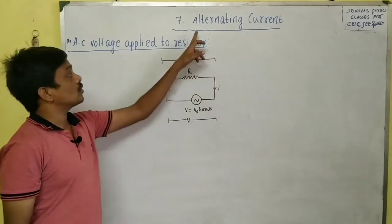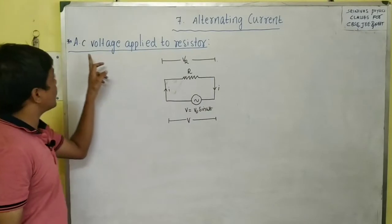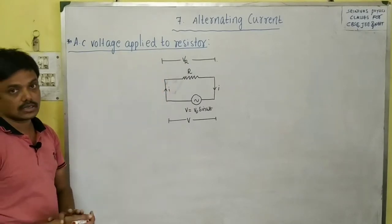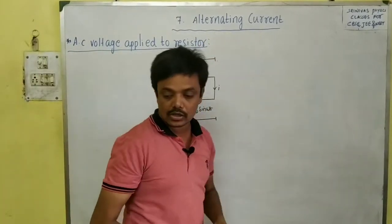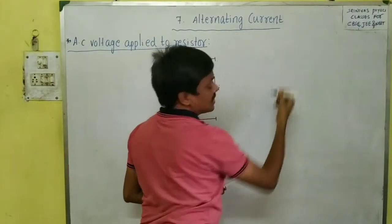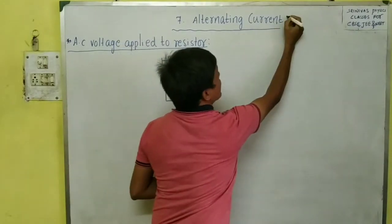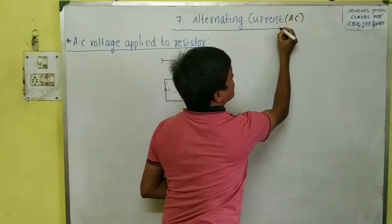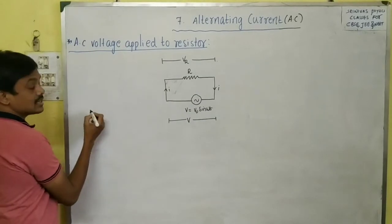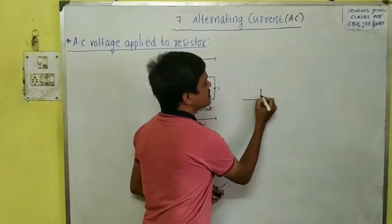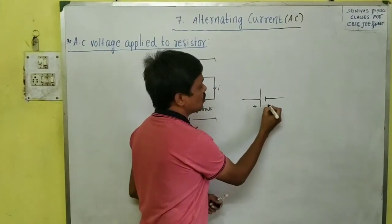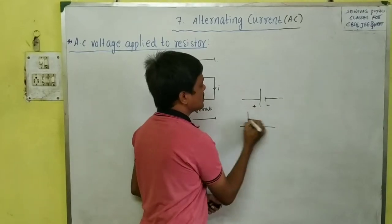Today I am going to start alternating current. I will explain AC voltage applied to a resistor. Alternating current means the current value varies with time. There are two types of currents: DC and AC. DC means the current value does not change with time.